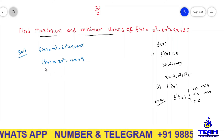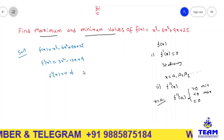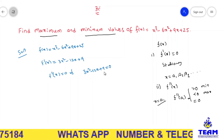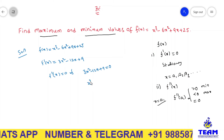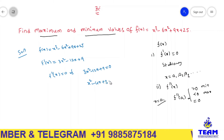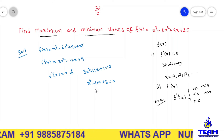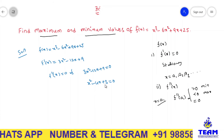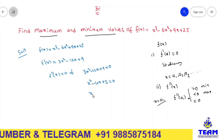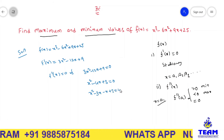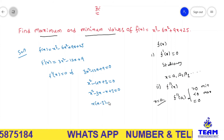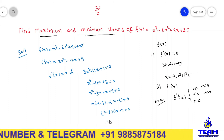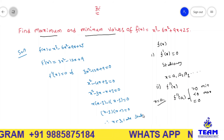To get the stationary values, equate f dash of x to 0: 3x square minus 12x plus 9 equals 0. Since every term is a multiple of 3, divide through by 3 to get x square minus 4x plus 3 equals 0. Factorising: x minus 3 times x minus 1 equals 0. Therefore x equals 3 and x equals 1 are the stationary values.